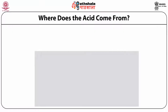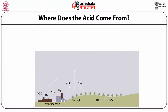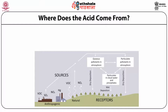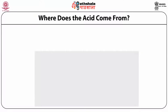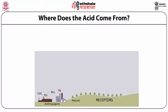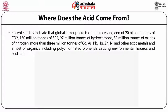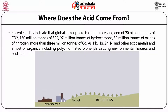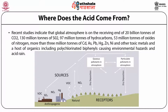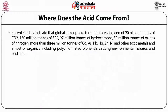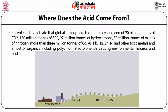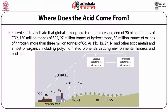Acidification of the environment is a man-made phenomenon. The super stack and smelters of Sudbury, Ontario release about 2,500 tons of sulfur dioxide into the air daily — the largest stack in the world, a symbol of the acid rain problem in North America. Recent studies indicate that the global atmosphere receives 20 million tons of carbon dioxide, 130 million tons of sulfur dioxide, 97 million tons of hydrocarbons, 53 million tons of oxides of nitrogen, more than 3 million tons of cadmium, arsenic, lead, mercury, zinc and nickel, and other toxic metals and organics including polychlorinated biphenyls, causing environmental hazards and acid rain.